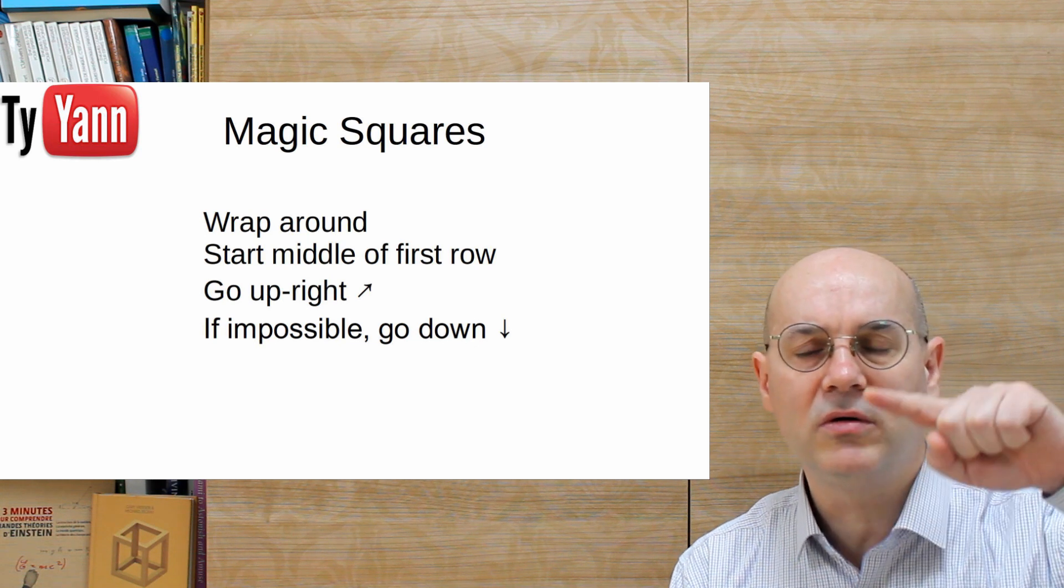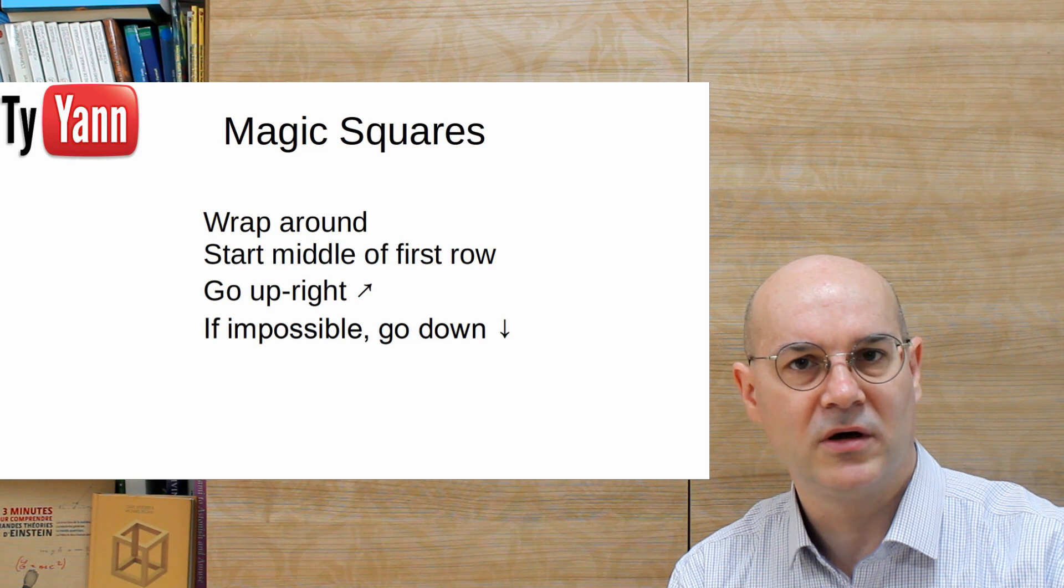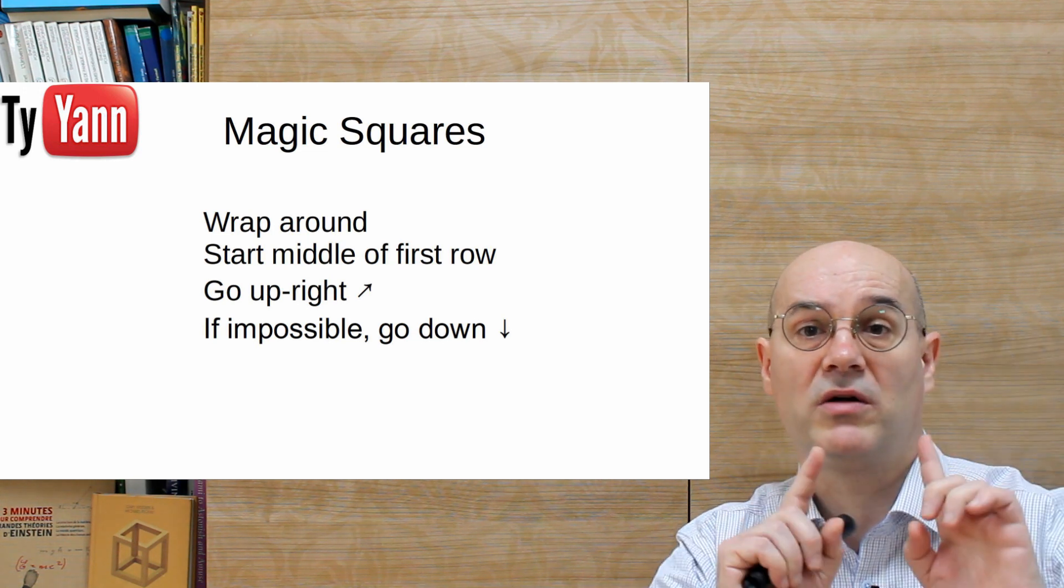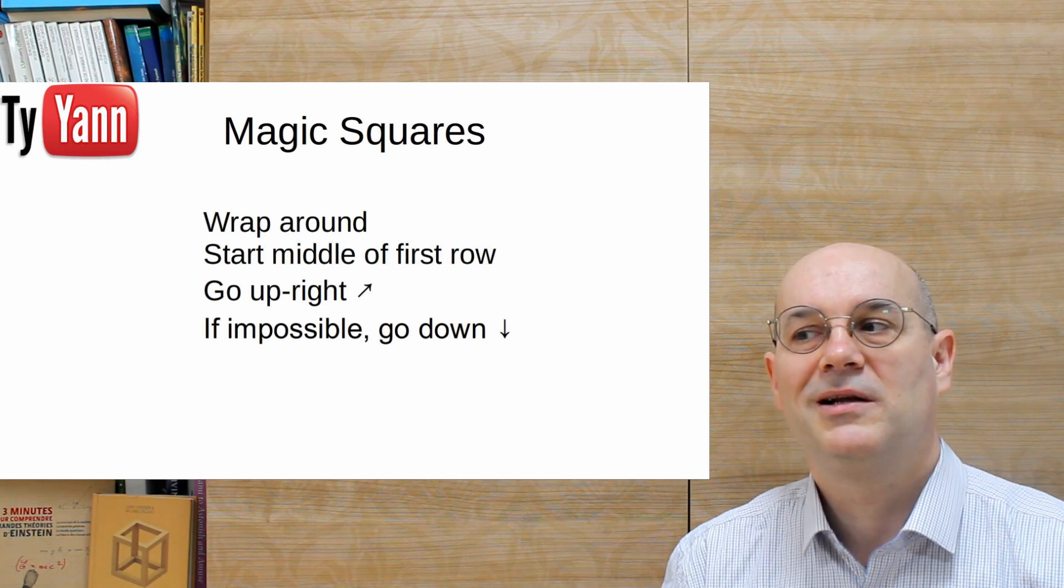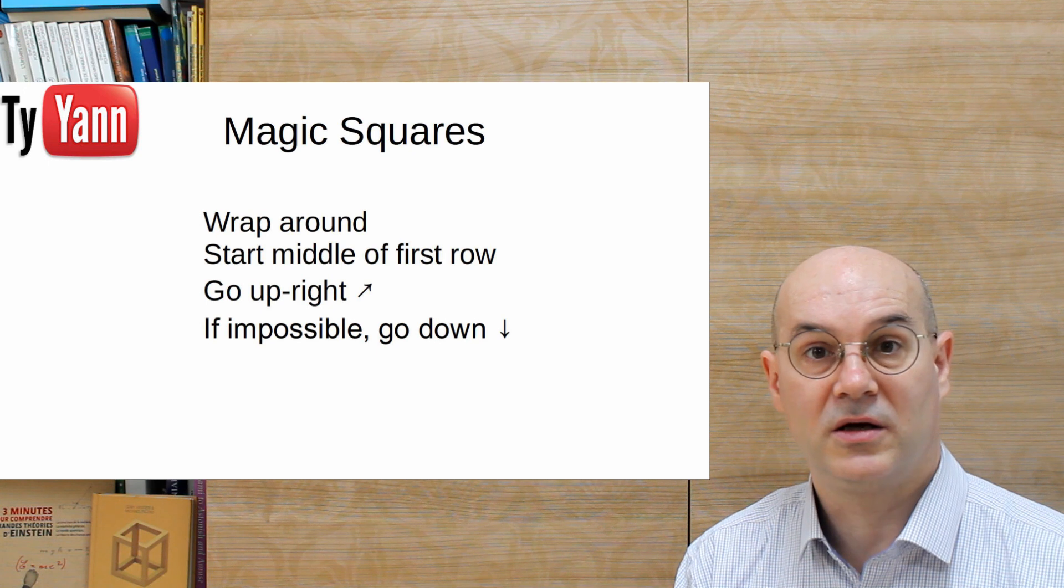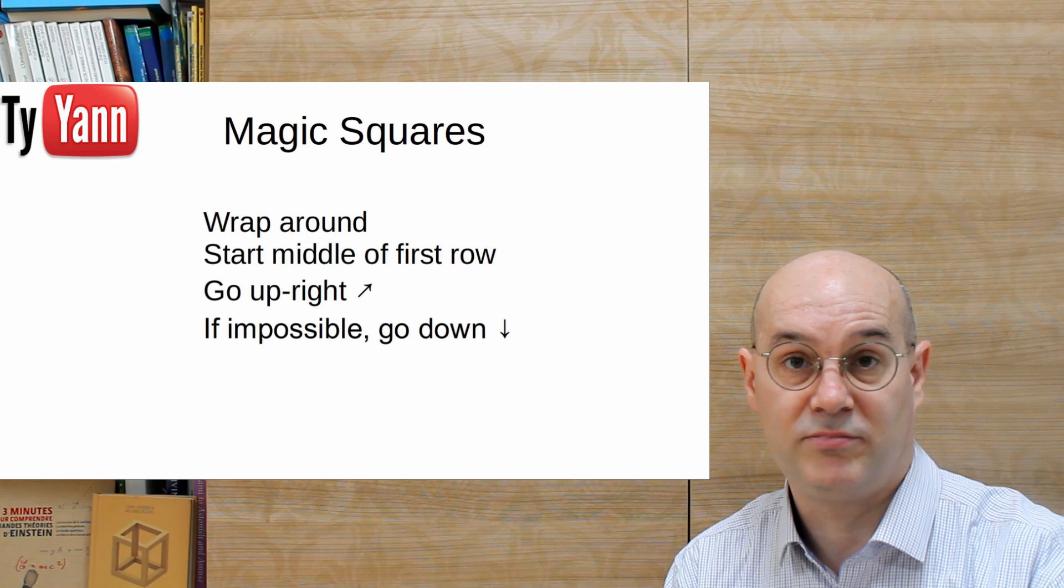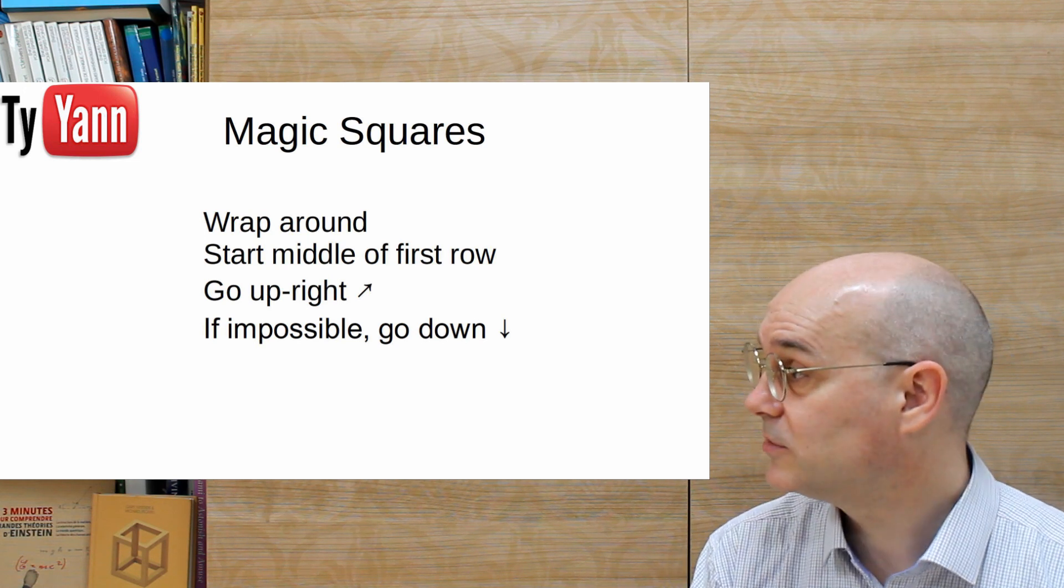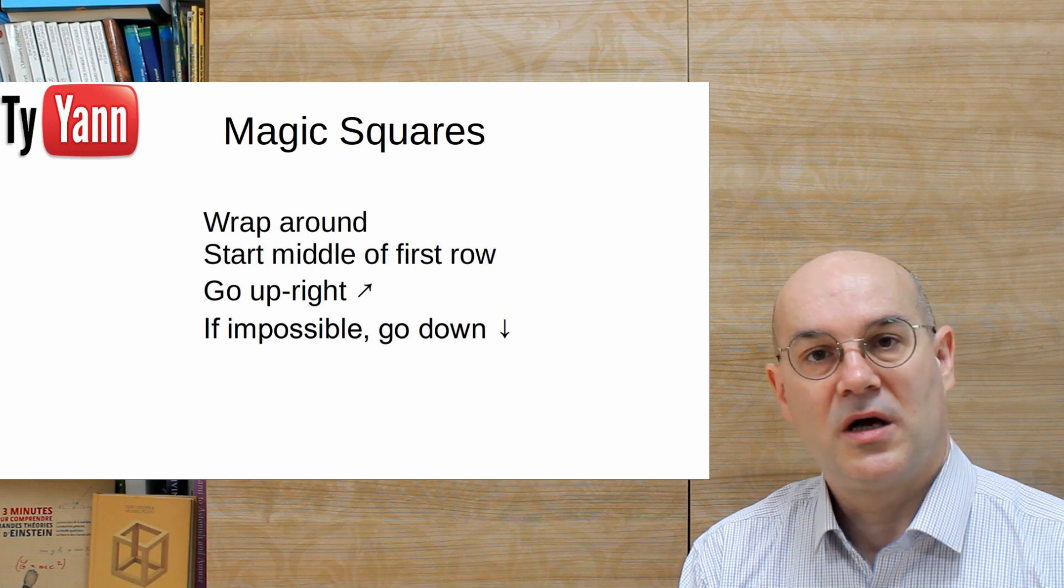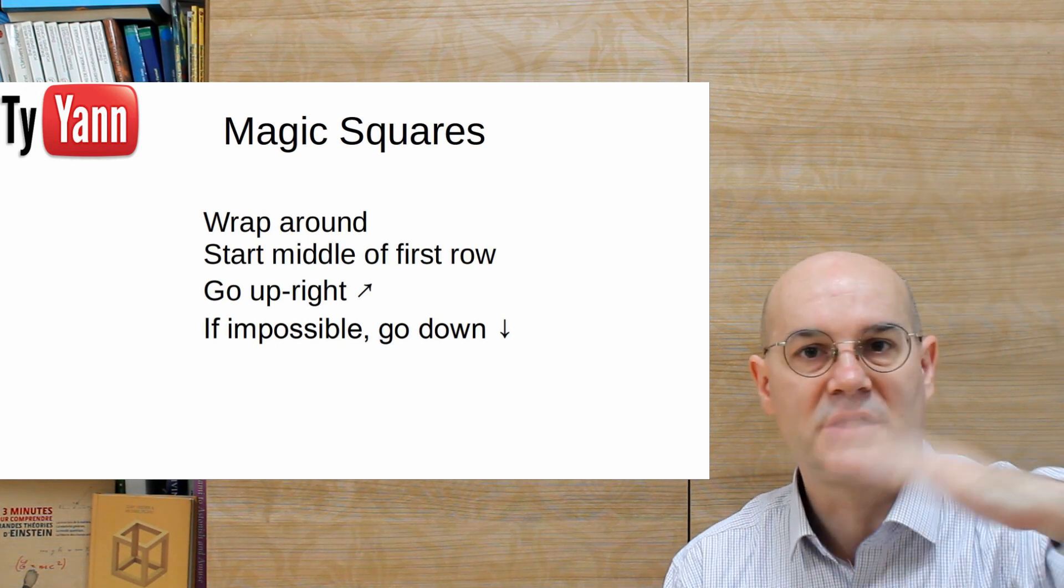When you go up, then you wrap around and arrive down. If you go down, you arrive like everything's wrapped around. If you know mathematics, it's like you are on a donut. If you get out on the right, then you arrive on the left. If you play pac-man, you know what I'm talking about.